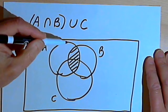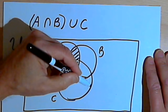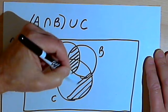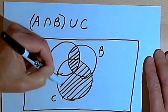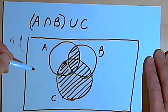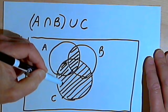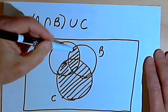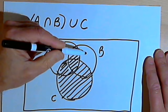Now I want the union of that overlapping area and set C. Since it's a union, I can shade in all of set C. What I've got here is the entire set C plus the place where I had an overlap between A and B.